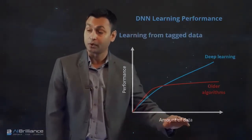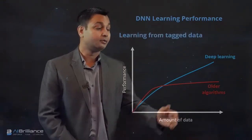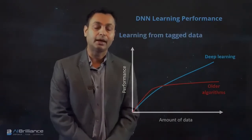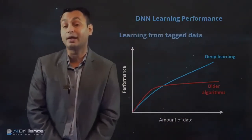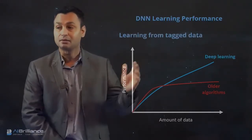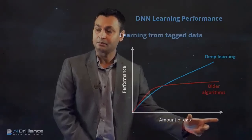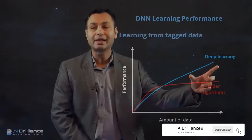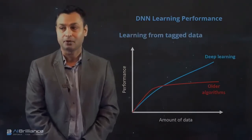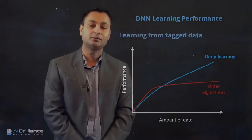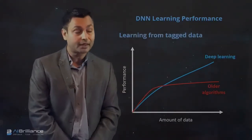What has changed with the deep neural network framework is that as you increase the amount of data, the performance of the algorithms keeps increasing. In some cases, using a classical algorithm with a large dataset might give you a classification accuracy of 60 to 70 percent, but with the same amount of data and a deep learning framework, you might achieve accuracy close to 99.9 percent. So deep learning enables a remarkable, quantum-leap jump in performance by accessing more data.